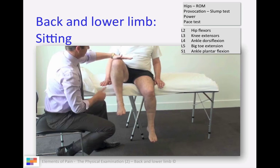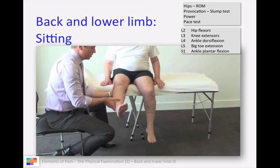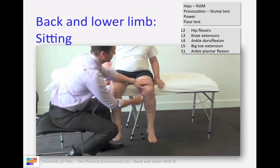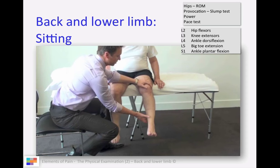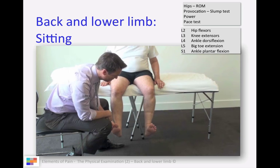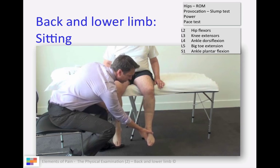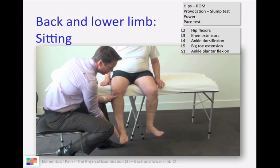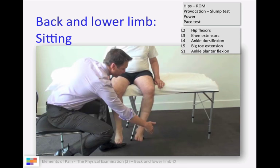Assessing power in the sitting position: L2 hip flexors, L3 knee extensors - do them both in turn and then compare sides. Then you can assess the feet simultaneously: ankle dorsiflexion L4, big toe extension L5, and then plantar flexion S1. Resisted abduction and external rotation assesses for piriformis muscle pathology - you're trying to reproduce their pain.